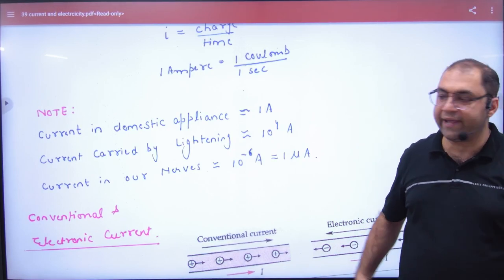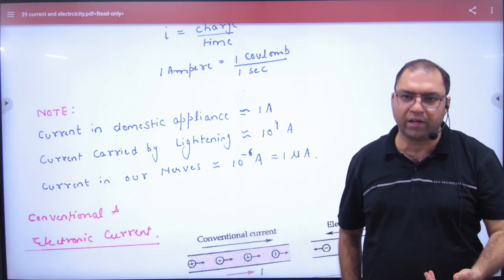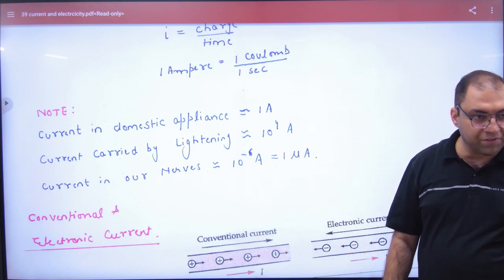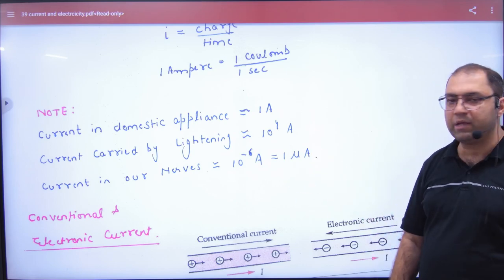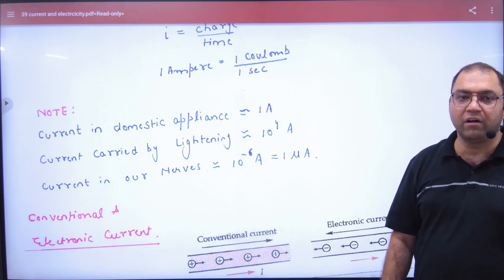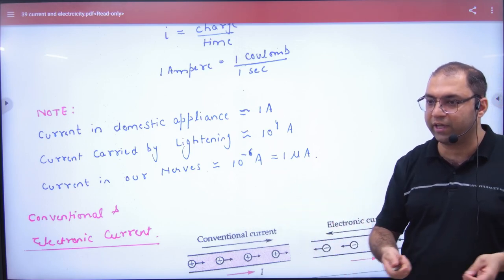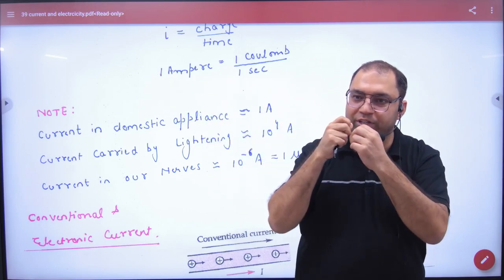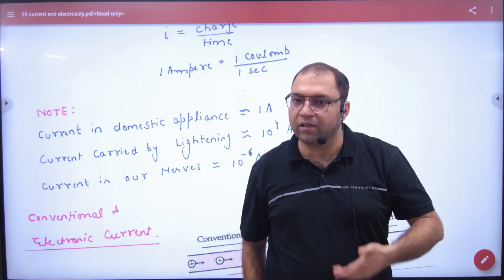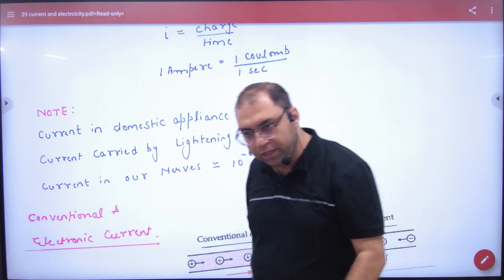Imagine if you touch one ampere, then what do you feel? And 10 to the power 4, then you will not get time to feel what happened. Current is in our nerves. Nervous system and body has current. It is very small, 10 to the power minus 6 ampere. But some people have such exceptions, in which there is more current in nerves. You see talent shows in India, in their body current value is automatically higher in the nerves. In our nerves there is not much current.